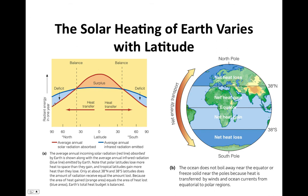Here we can see the amount of heat absorbed and radiated by Earth's surface on average each year. The red line shows energy absorbed at different latitudes, and the blue line shows heat radiated by Earth. Near the equator, between roughly 38°N and 38°S, the surface absorbs more heat than it releases — a net heat surplus. At higher latitudes closer to the poles, the surface gives off more heat than it absorbs — a net heat deficit.